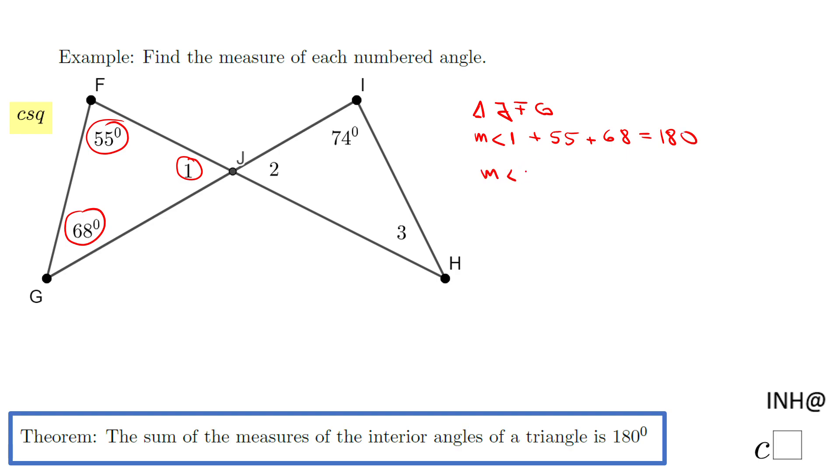to add 55 and 68. 55 plus 68, that will be 123, equals 180. And the last step: we're going to subtract 123 on both sides. And we finish. Measure of angle 1 is 180 minus 123. I end up with 57 degrees.